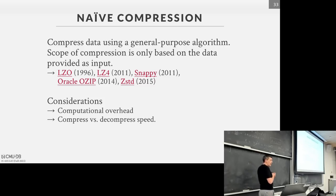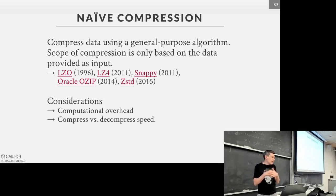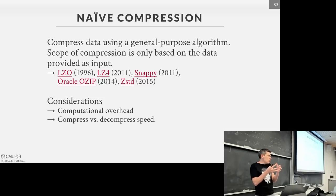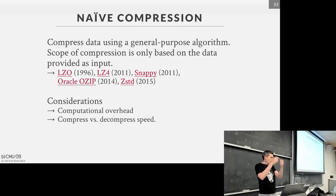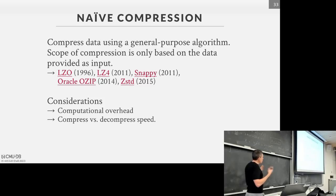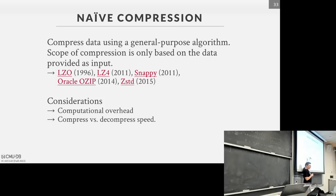For block-level compression we use a naive compression scheme — making a call to a third-party library. You wouldn't want to use gzip because it's slow, but there are faster alternatives. LZO was a big breakthrough in the 1990s. Z-Standard is considered the state-of-the-art compression scheme now, from Facebook — they're actually working on a new version that isn't public yet. The database system has no way to interpret or do introspection into the compressed version of the block.